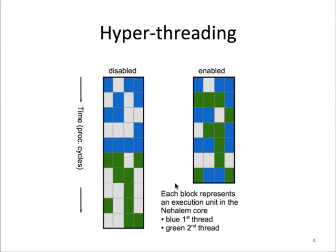Note that while the overall execution time has been reduced, the time for the blue thread to finish is actually increased. So while hyperthreading may increase throughput, it may do so at the expense of individual threads. This is a consideration you'll have to take into account when deciding whether to take advantage of hyperthreading.